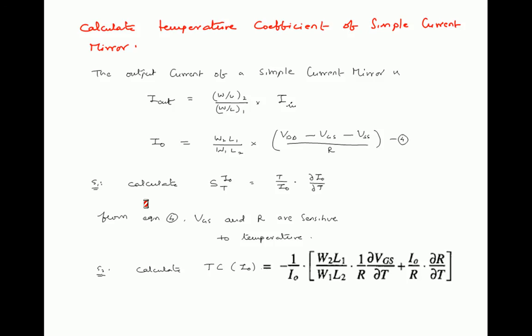The output current of a simple current mirror equals the input current when both transistors have the same aspect ratio; otherwise it depends on the W/L ratio. So I0 equals (W/L)_2 divided by (W/L)_1 times I_input, where I_input equals (VDD − VGS − VSS) / R. Therefore I0 equals (W2·L1)/(W1·L2) times (VDD − VGS − VSS)/R.